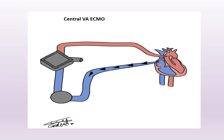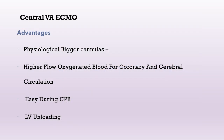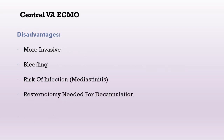This simplified figure for central VA ECMO shows blood drawn from the right atrium, with oxygenated blood returned to the ascending aorta — this is the classic central VA ECMO form done with sternotomy, mainly in cardiac surgery. The advantages of central VA ECMO include physiologically better cannula placement, higher flow of oxygenated blood to coronary and cerebral circulation, easier conversion during cardiopulmonary bypass, and assistance with left ventricular unloading. The disadvantages are that it is invasive, carries high risk of bleeding, high risk of infection and mediastinitis, and resternotomy may be needed for decannulation.